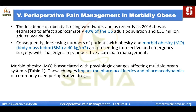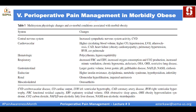The incidence of obesity is rising worldwide, and an increasing number of morbidly obese patients present for elective and emergency surgery. Morbidly obese patients have physiologic changes affecting multiple organ systems impacting pharmacokinetics and pharmacodynamics. In the CNS, there is increased sympathetic nervous system activity. Cardiovascularly, they have higher circulating blood volume, higher cardiac output, hypertension, potential left ventricular hypertrophy, higher risk of atherosclerosis with coronary artery disease and heart failure, and higher risk of pulmonary hypertension.